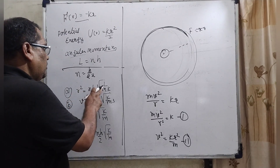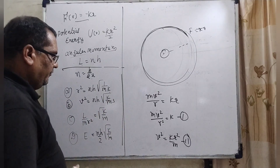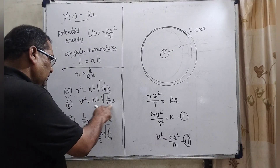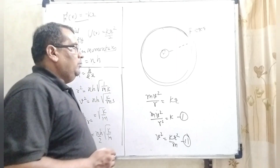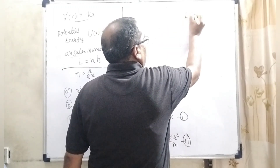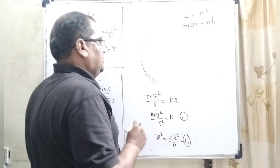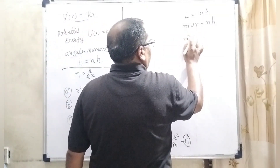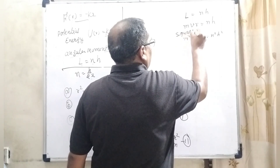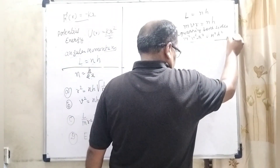Looking at option A, r² = nh√(1/mk), v is eliminated, so our first priority is to eliminate v. For option B, v² = nh√(k/m³), r is eliminated. Now, angular momentum L = nh-bar, and L = mvr, so mvr = nh-bar. Squaring both sides: m²v²r² = n²h-bar² — this is equation three.